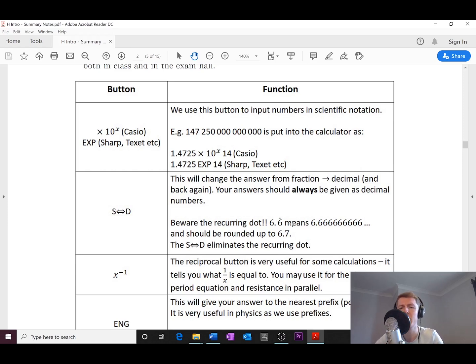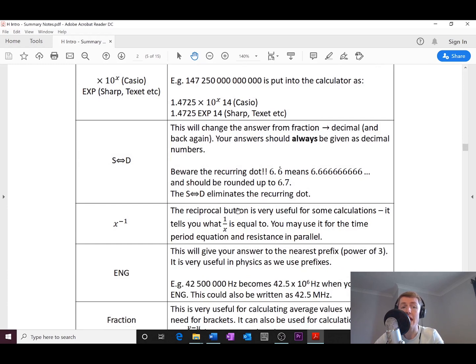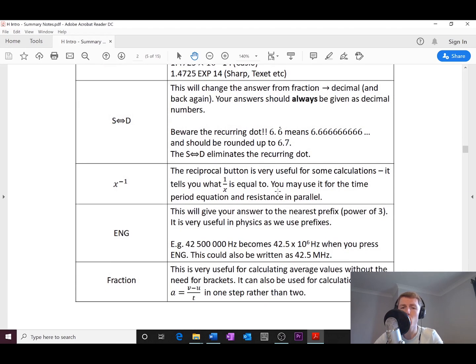There's also the x to the minus 1 button, which is your inverse or reciprocal button. Remember when doing things like resistance in parallel, you would have used this as one of your methods of inputting your one overs into your calculator. It can also be useful for things like the period equation, but when we do resistance parallel again during the electricity topic, you'll get using that one.